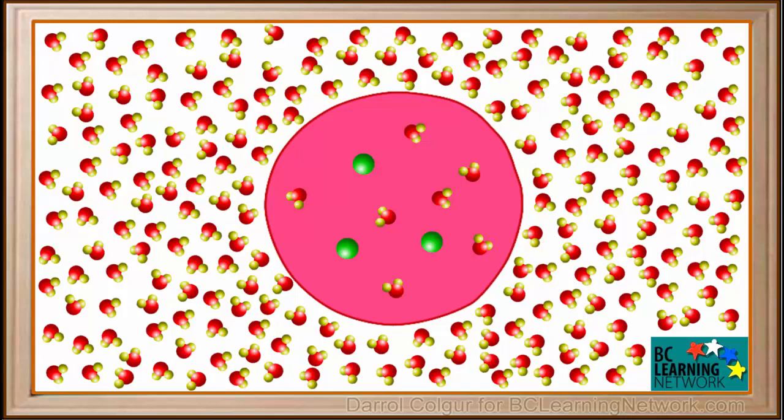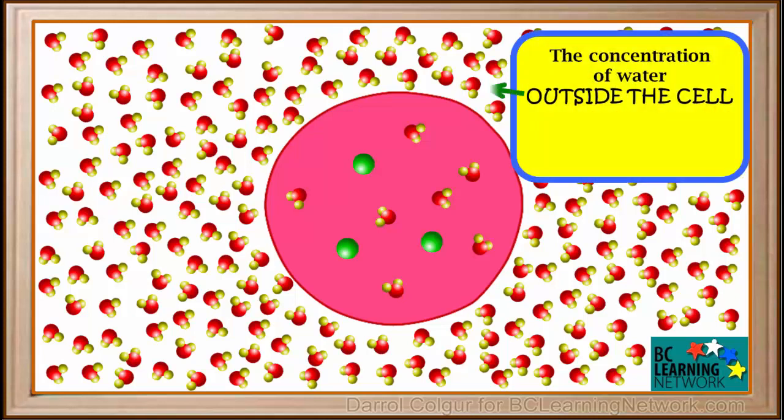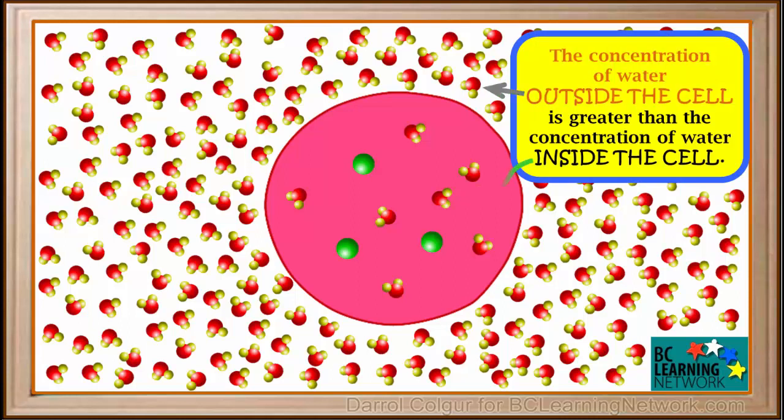Now we will do another experiment. This time we will place the cell in pure distilled water, which has no dissolved salt. Because there is no salt in water outside the cell, the concentration of water outside the cell is greater than the concentration of water inside the cell, where some of the room is taken up by particles of dissolved salt.